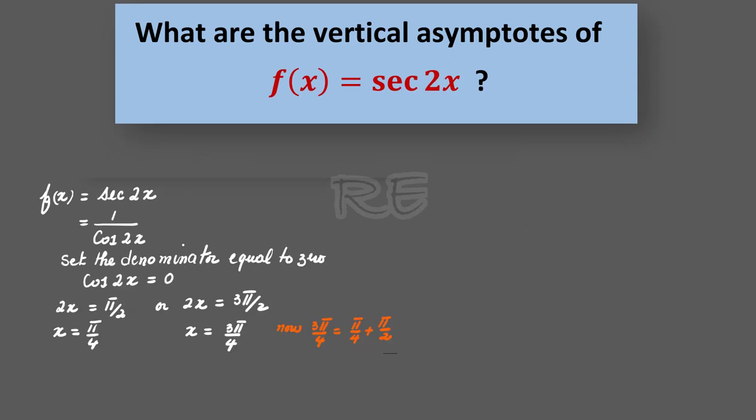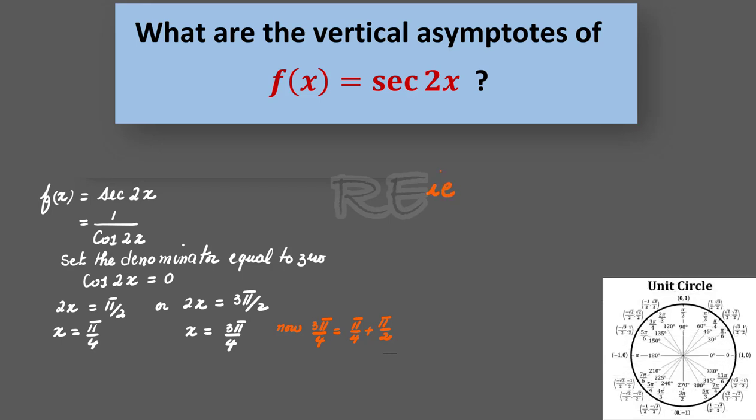Therefore, if we understand 3pi over 4 to be pi over 4 plus pi over 2, we do realize that for the general solution, the vertical asymptotes will be x equal to pi over 4 plus an integer n multiplied by pi over 2.